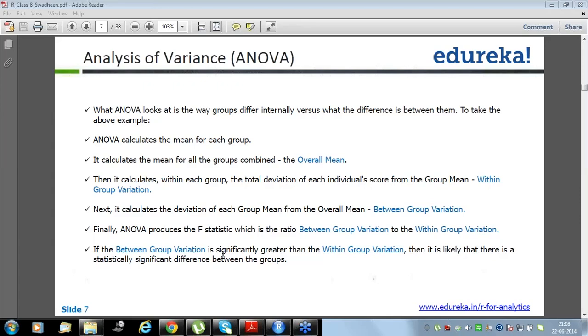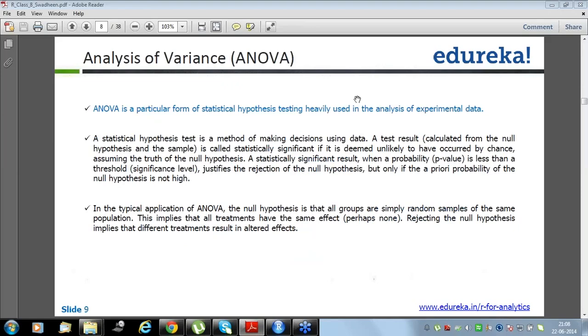Now it calculates the deviation of each group mean from the overall mean, between group variation. And as now the variation comes into the picture, ANOVA uses F-test. I told you, F-test is used to compare the variation. So in ANOVA, F-test compares the between group variation with the within group variation. And then based on the F-test value, you say whether the average of all the models can be supposed to be equivalent or different. So let me explain you this phenomena in a little better way.